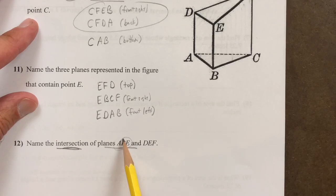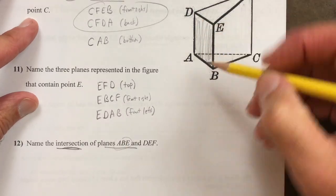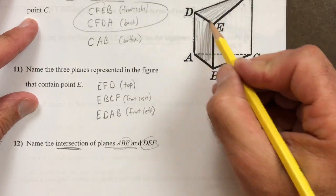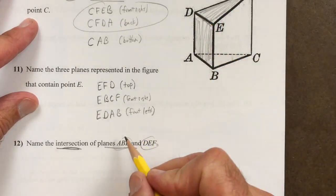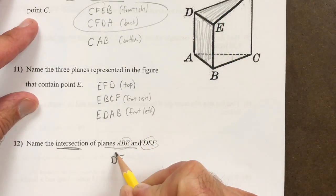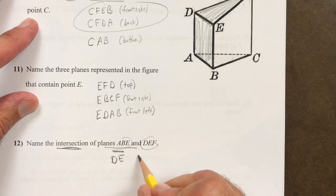In number 12, the intersection of planes A, B, E and D, E, F is going to be a line segment. Notice from D to E. So it's line segment DE. Use a line segment symbol at the top.